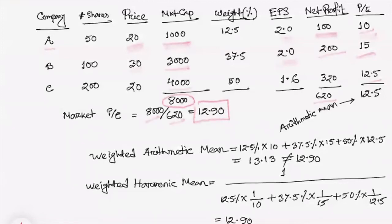Now, you are given three price-earning ratios: 10, 15, and 12.5. What will happen if you take the normal average, like you sum all these numbers and divide it by 3? So if you add 10, 15, and 12.5, and then divide it by 3, the arithmetic mean will be 12.5. Certainly, this is not the answer because the market P/E is 12.9.